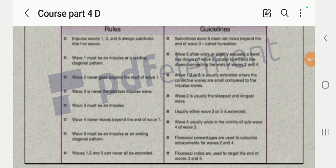Usually either wave three or five is extended. Wave four usually ends in the vicinity of the sub-wave four of wave three. Fibonacci percentages are used to calculate retracement of wave two and four. Fibonacci ratios are used to target the end of wave three and five.